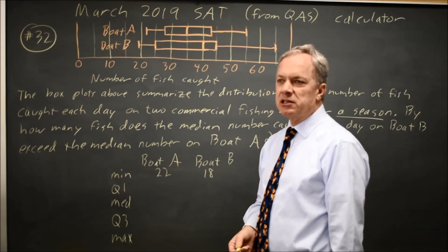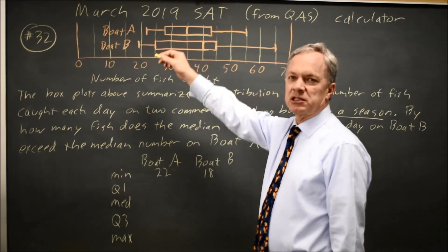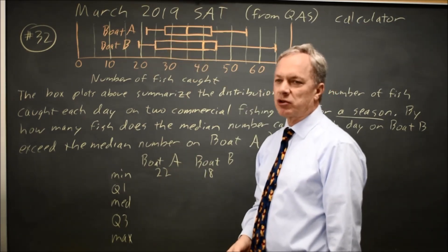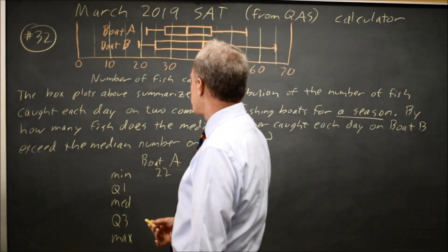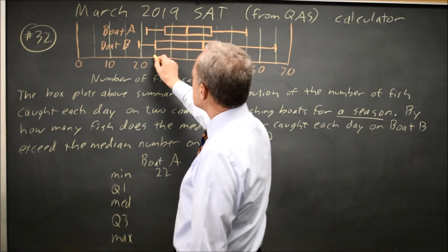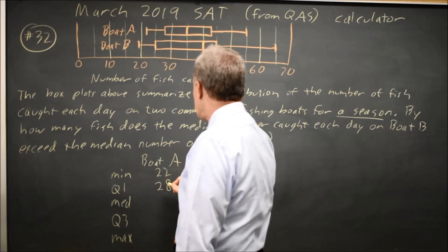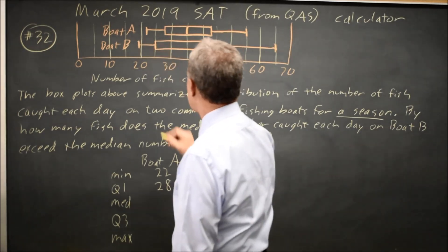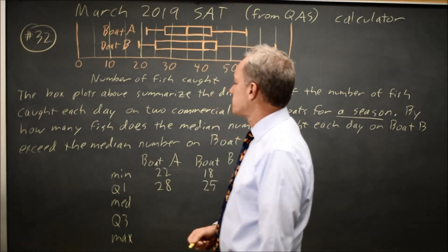The first quartile is the 25th percentile. One out of four catches will be smaller, three out of four will be larger. That's what they mean by quartile, it's the top of the bottom quarter, the bottom fourth. And for boat A, that looks like 25, 30, so this is probably 28. And for boat B, it's exactly 25. And that's the first quartile of the 25th percentile.